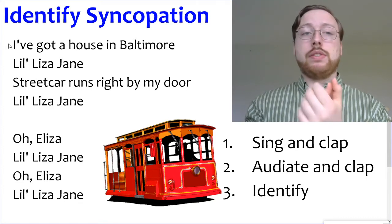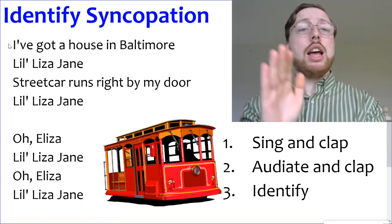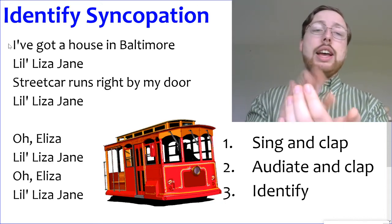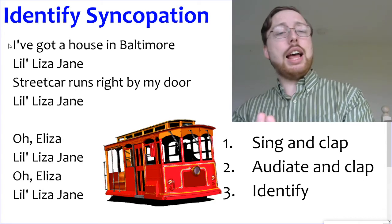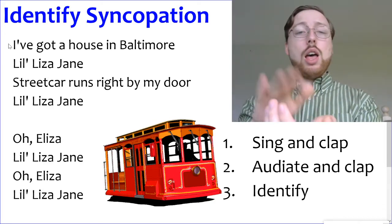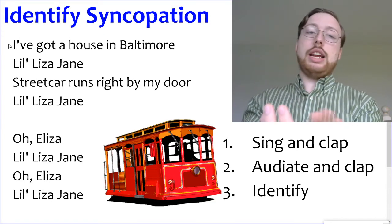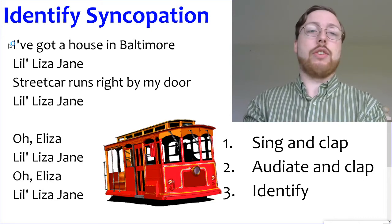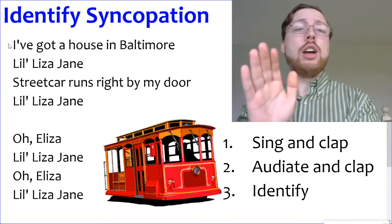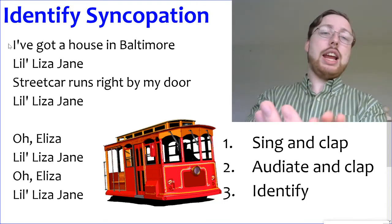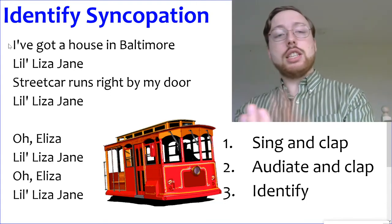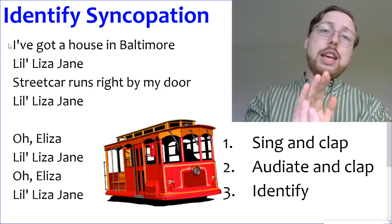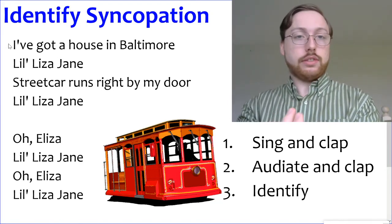Let's start by singing and clapping. Ready, one, two, ready go. I've got a house in Baltimore, Lil' Eliza Jane. Streetcar runs right by my door, Lil' Eliza Jane. Oh Eliza, Lil' Eliza Jane. Oh Eliza, Lil' Eliza Jane. How'd you do? We could do that clapping one more time before we just audiate. Let's sing and clap again — ready, one, two, ready go. I've got a house in Baltimore, Lil' Eliza Jane. Streetcar runs right by my door, Lil' Eliza Jane. Oh Eliza, Lil' Eliza Jane. Oh Eliza. How'd you do?